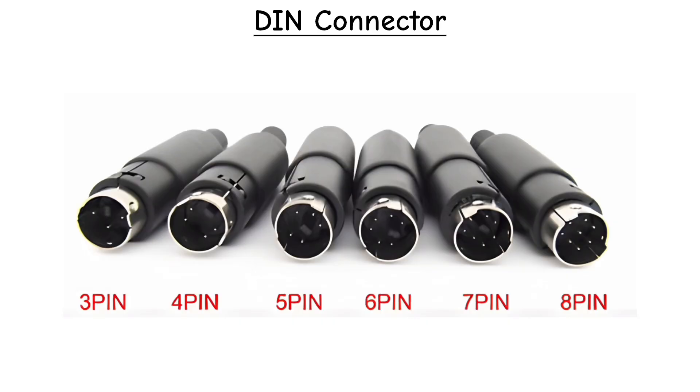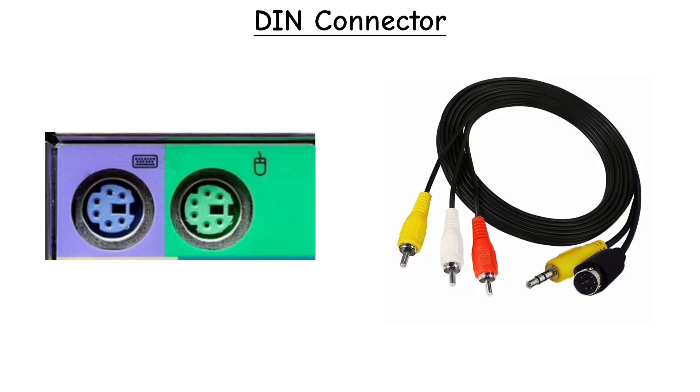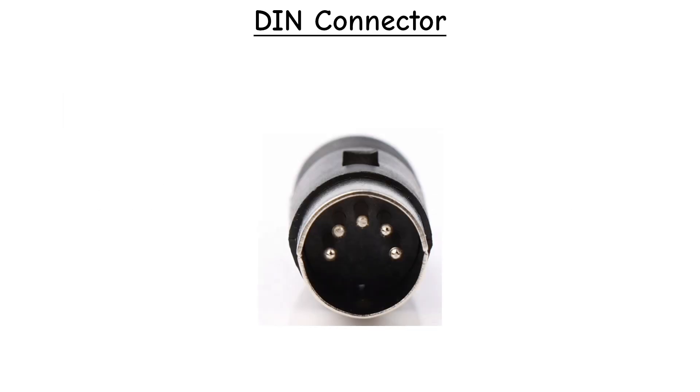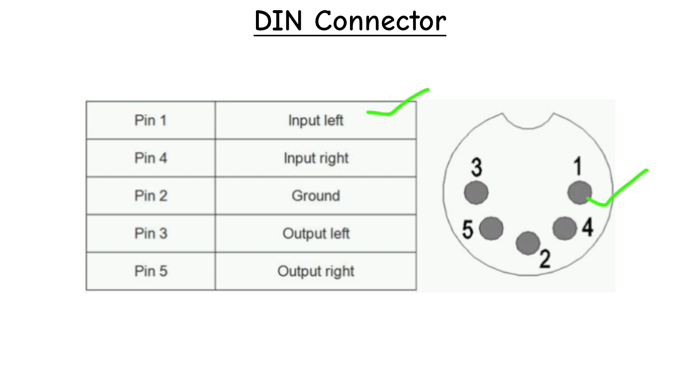There are also smaller versions like mini DIN for PS2 keyboards and S-video. The most popular for audio was the 5-pin 180 degrees version. Pin 1 carries left input, pin 4 carries right input, pin 2 is the common ground, while pins 3 and 5 carry left and right outputs.